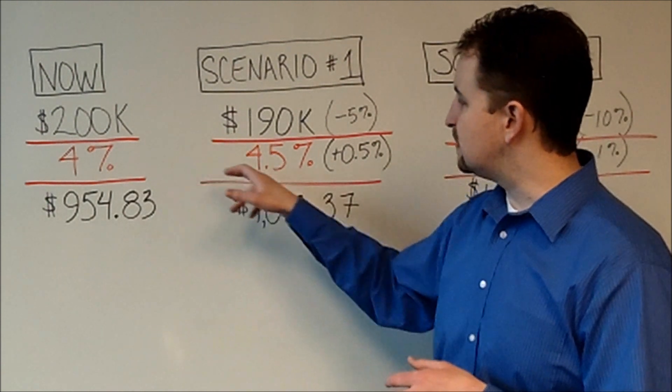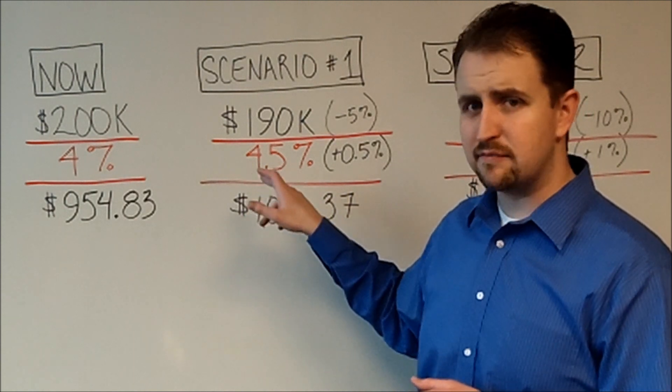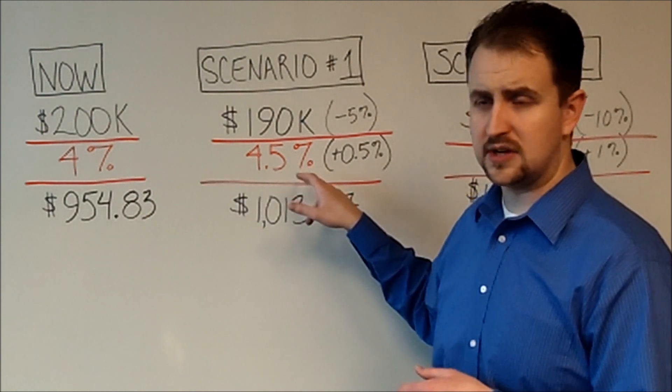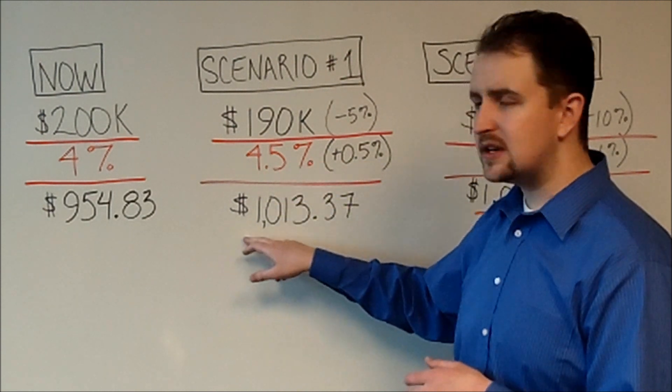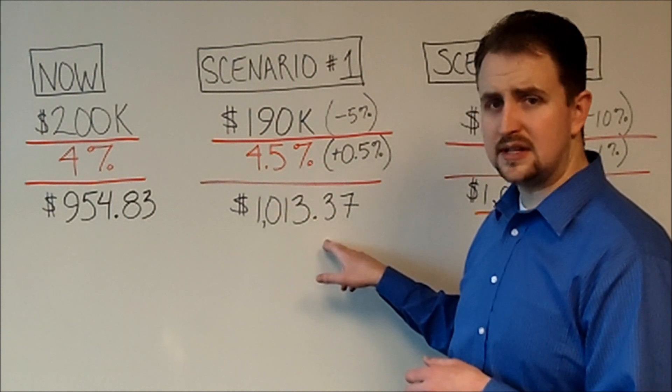Now it seems like a good thing but if in that same time interest rates go up just one half percent from 4% to 4.5% which is still a good interest rate. But if they go up one half percent, look what it does to your monthly payment. It goes to $1,013.37.